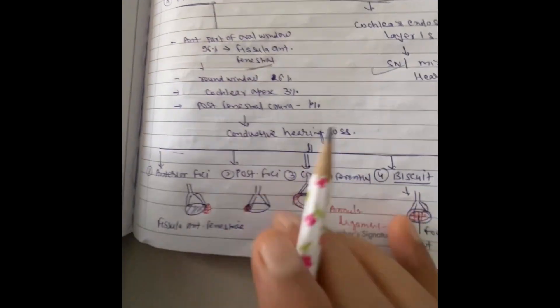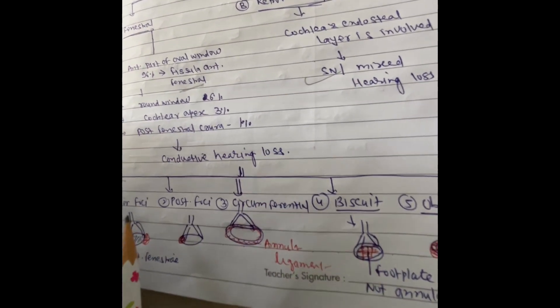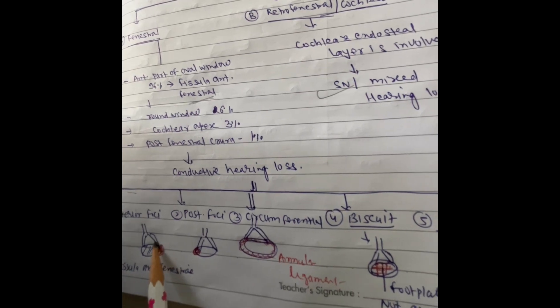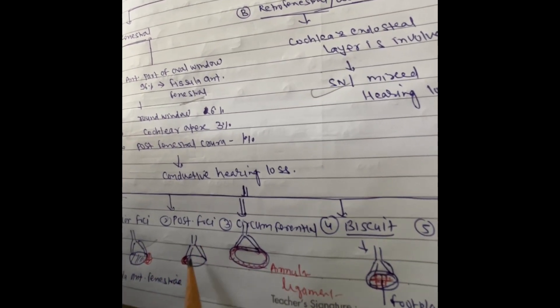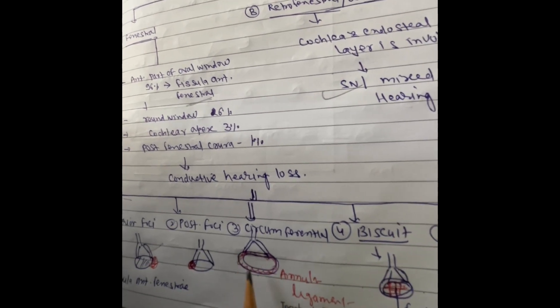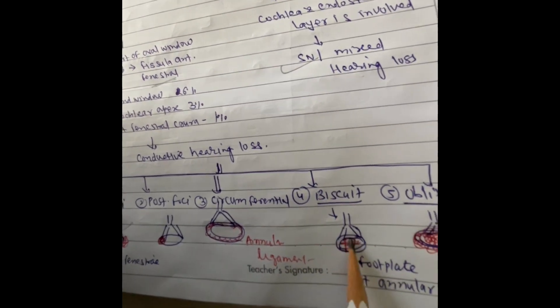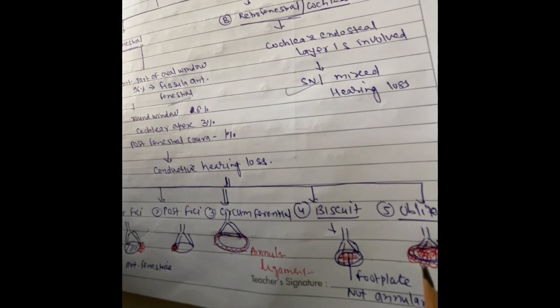In retrofenestral or cochlear type of otosclerosis, there is endosteal layer hyaline deposition, ultimately leading to sensorineural or mixed hearing loss. For fenestral type, there are five subtypes: anterior foci, posterior foci, circumferential, biscuit, and obliterative. In anterior foci, the anterior crural region is involved. In posterior foci, the posterior crural region is involved. In circumferential, the annular ligament is involved but the central region is clear. In biscuit type, the annular ligament is not involved but the central footplate is. In obliterative, both the annular ligament and central area are involved with an obliterative, cavitating footplate.